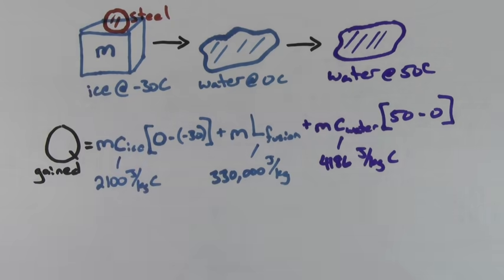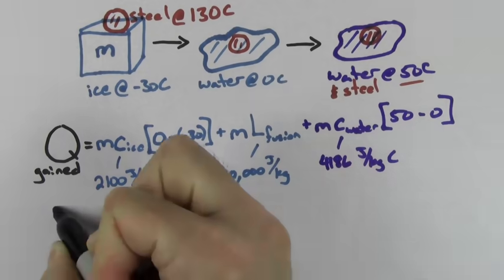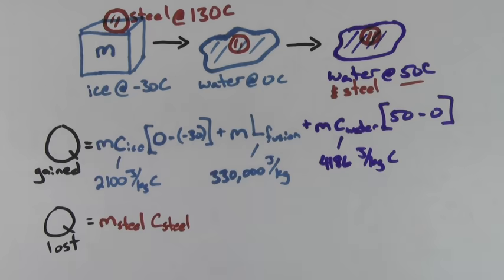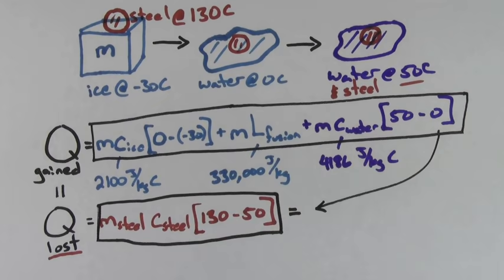If the ice gained its heat from a steel sphere initially at 130 degrees Celsius sitting on top of the ice cube, you could determine how much heat was lost by the steel. The steel goes from 130 degrees Celsius to 50 degrees Celsius. We've exchanged T initial and T final to avoid the negative sign. Overall, the total heat gained by the ice has to equal the total heat lost by the steel.